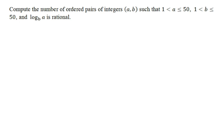Here's a view of the problem. We would like to compute the number of ordered pairs (a, b), where a and b are integers from 2 to 50 inclusive, and we want logarithm a in base b to be a rational number.